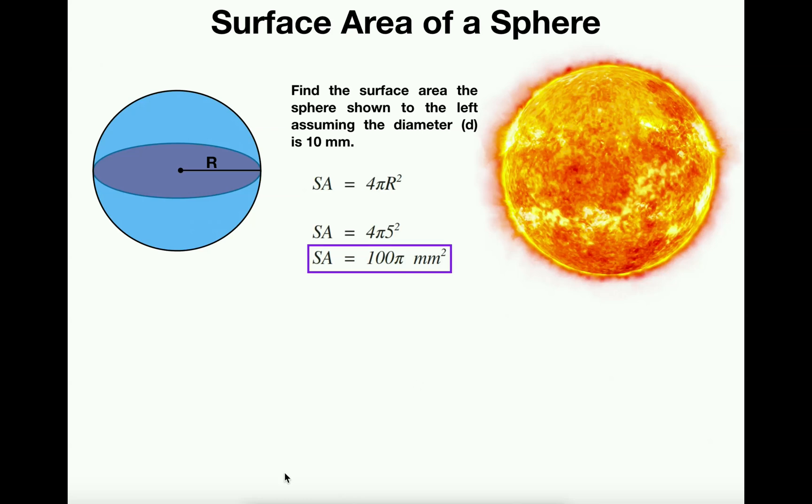So recall that a sphere is really just a ball, like a basketball, a golf ball, relatively a sphere if you discount the dimples. Other examples would be planets or stars. These are going to approximate spheres. And the sphere has a radius, which is the distance from the center of the sphere to any point along the periphery of that sphere.